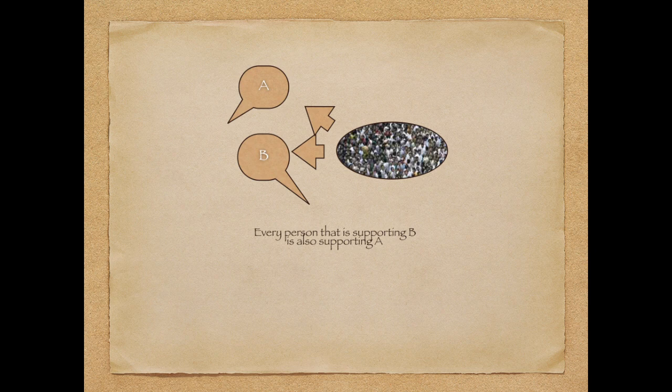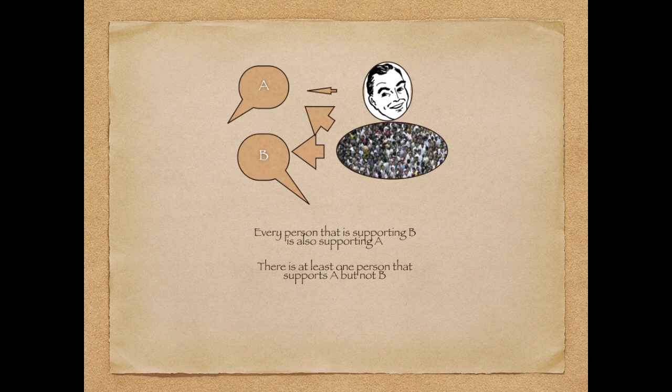So exactly the same person is not - we're not counting the people, we're comparing the sets. And then there is a guy who supports this one but does not support this one. So basically, the people who vote for this one are a subset of the people who vote for this one.